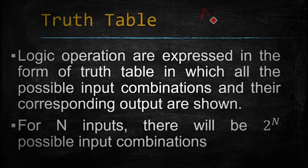If there are two inputs A and B, then the combination will be... two inputs, then combination will be N equals 2. N equals 2, combination 2 raised to power N, it means 2 raised to power 2. There will be four combinations.